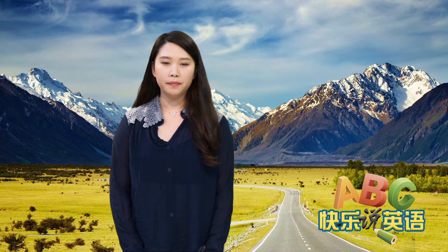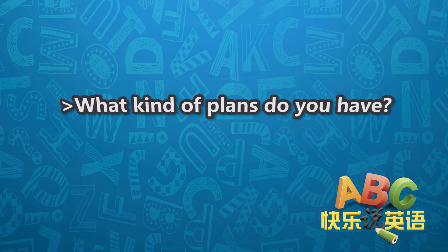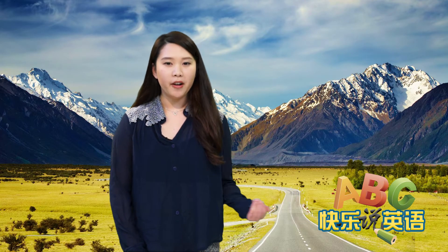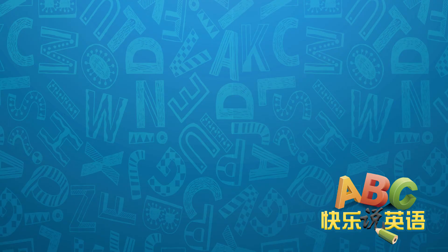首先，你可能想要问店员说，你们提供什么样的方案呢？你就可以问他：What kind of plans do you have? 就是你们有什么样的方案？那么店员可能会跟你介绍，我们有A方案、B方案、C方案。那你可能想知道每一个方案里面包含了哪一些东西？你就可以问他：What is included in each plan? 就是每一个方案有包含什么？